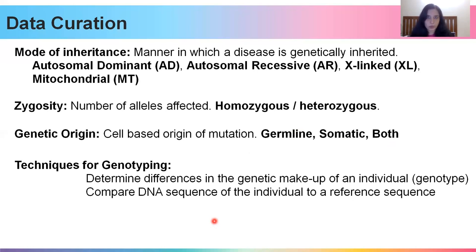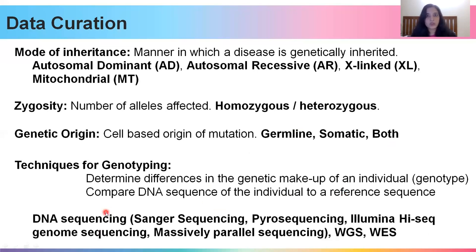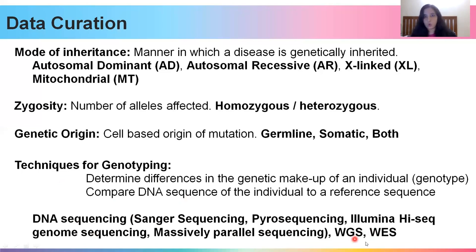Next is techniques for genotyping — how exactly was the mutation found in the paper? Genotype is the genetic makeup of an individual, and several techniques can be used to determine what mutation a person has. These include DNA sequencing techniques such as Sanger sequencing and pyrosequencing, whole genome sequencing, or whole exome sequencing. The materials and methods section of the paper will have explained the technique in great detail, so you can take your details from there.